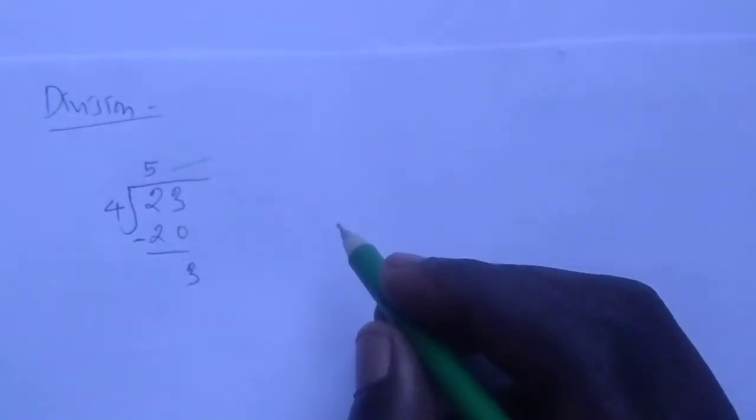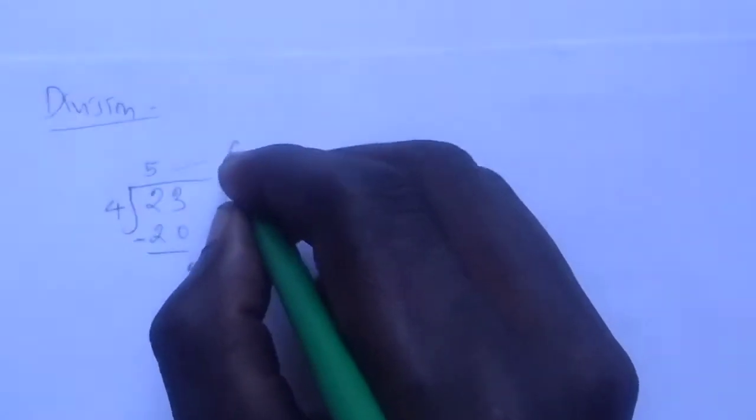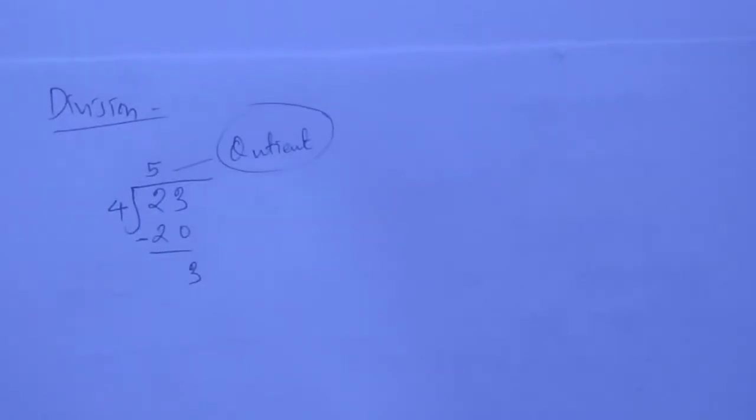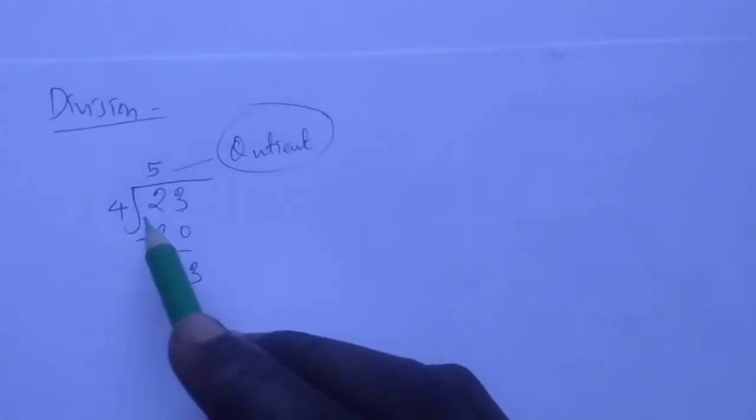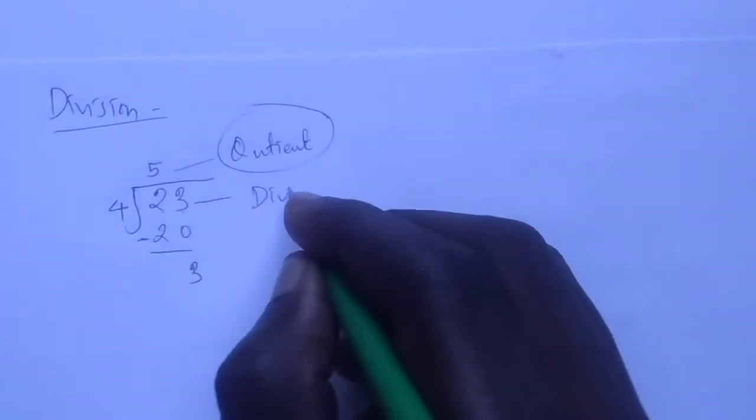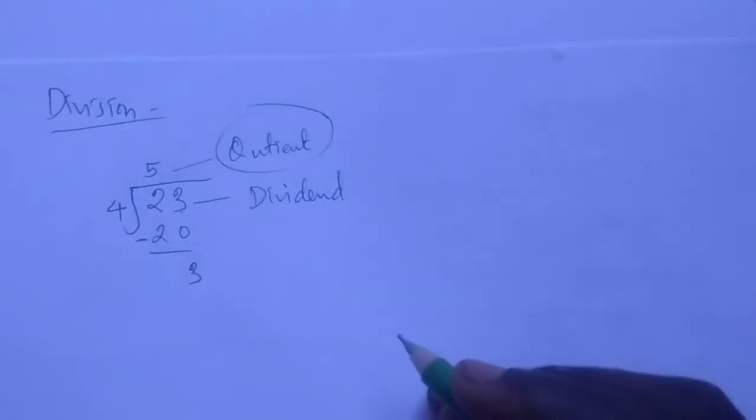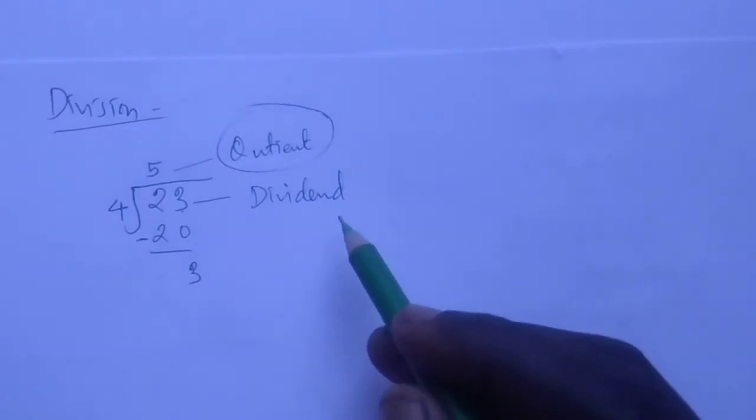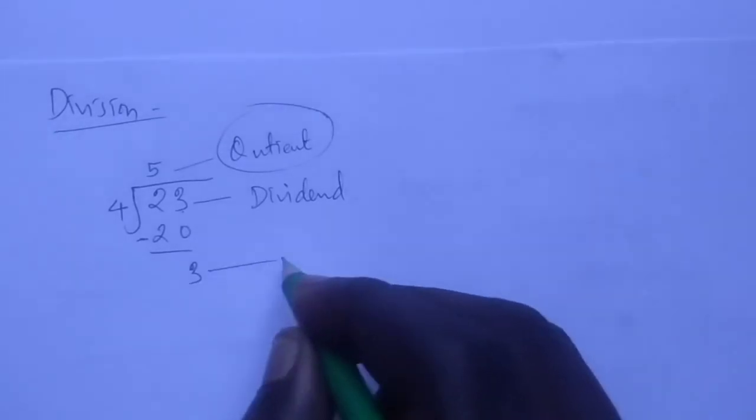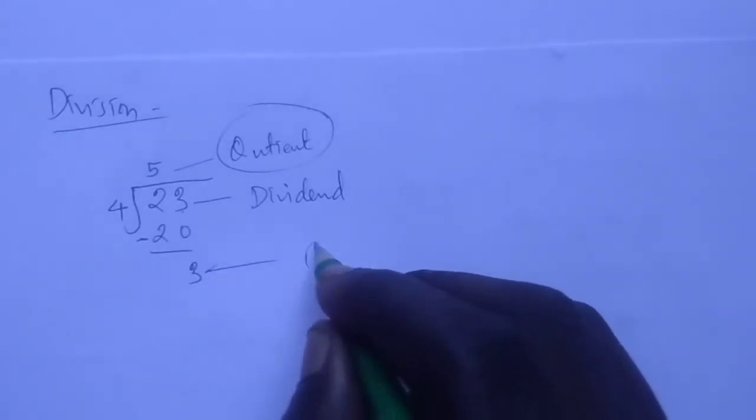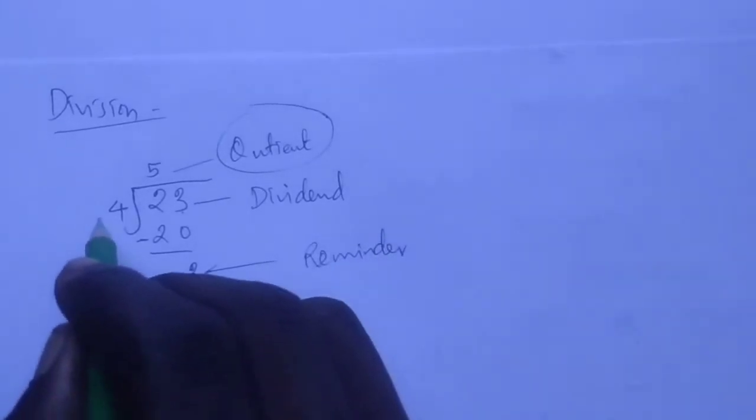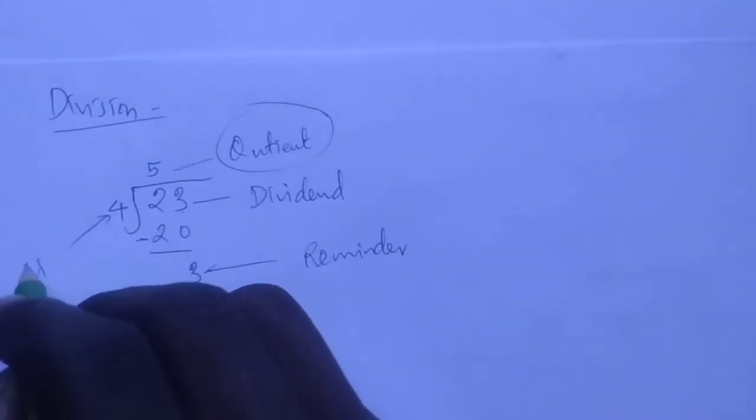From here, this 5 is called the quotient. It is the number obtained after dividing 23 by 4. This is called the dividend. And this here is called the remainder. And this is the divisor.